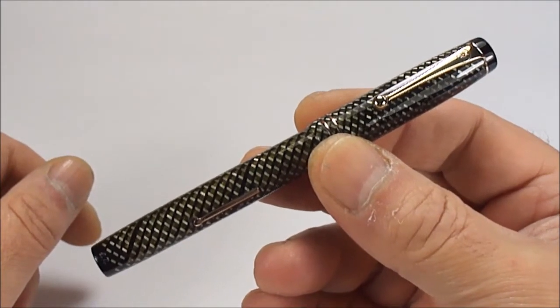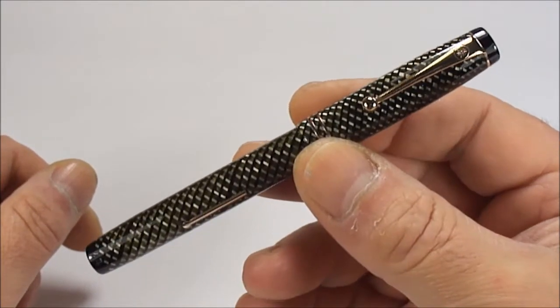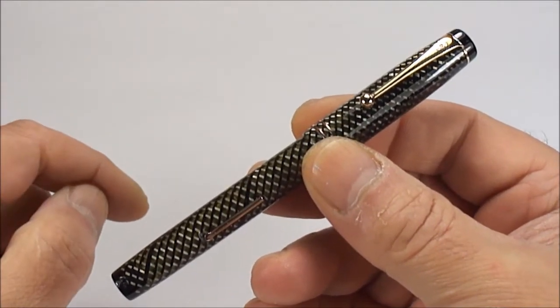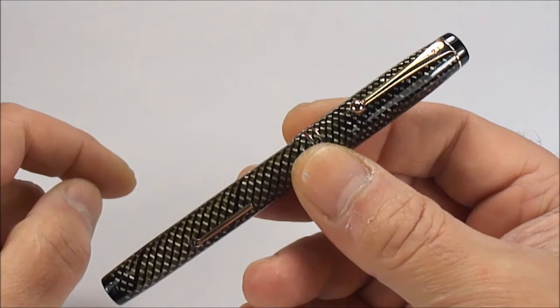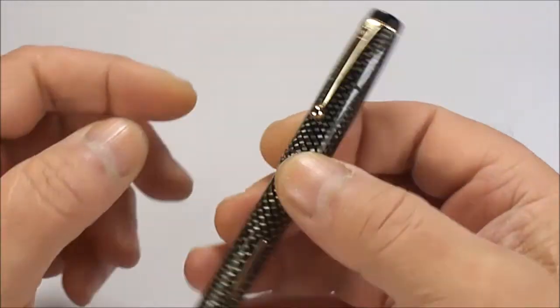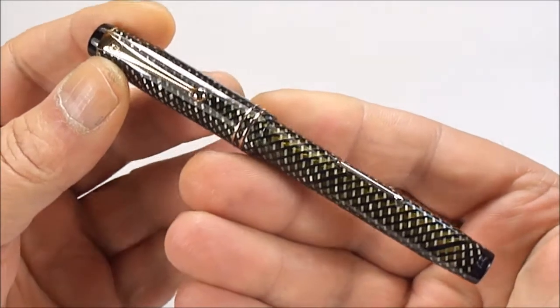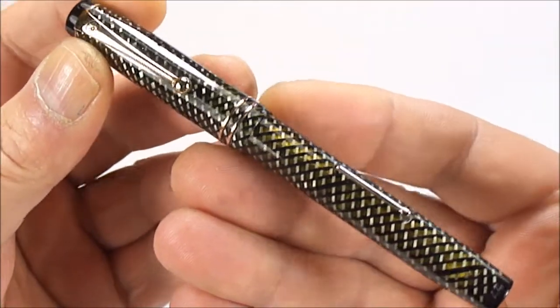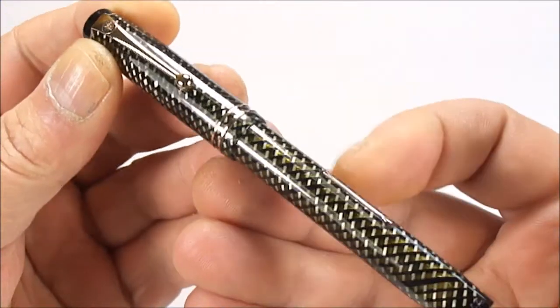This is actually the De La Rue pen made in Great Britain. The model of this pen is the 1332-44. The pen, as I say, is the De La Rue pen as you can see.